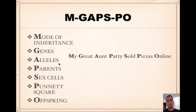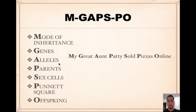MGAPS-PO — here's a way to remember it: M is mode of inheritance, G is genes, A is alleles, P is parents, S is sex cells, P is Punnett squares, and O is offspring. A good way to remember it is 'my great aunt Patty sold pizzas online.'